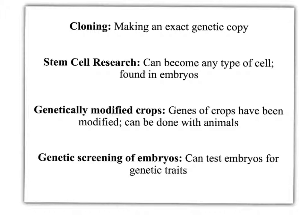One form of genetic engineering is cloning. This is where you make an exact genetic copy of something else. For instance, you could make an exact genetic copy of an animal, or of plants if they have particularly good features for food. You can also replicate particular cells, such as stem cells.